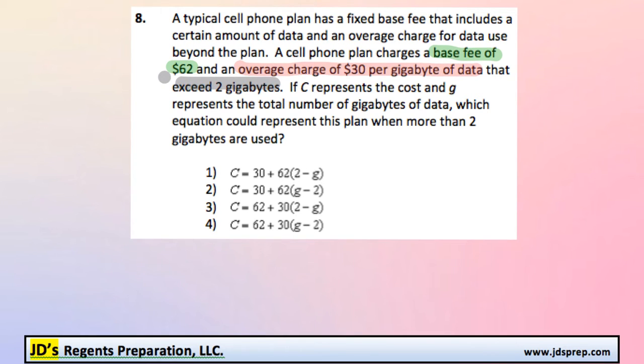That's really important too. If C represents the cost and G represents the total number of gigabytes of data, which equation could represent this plan when more than 2 gigabytes are used?